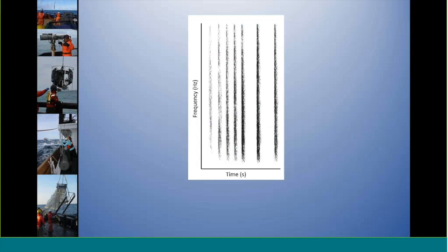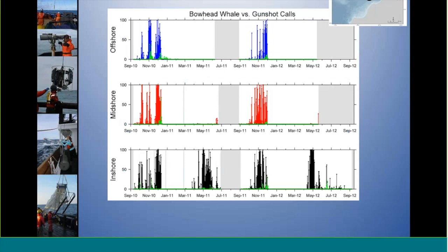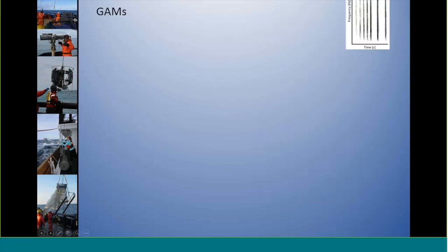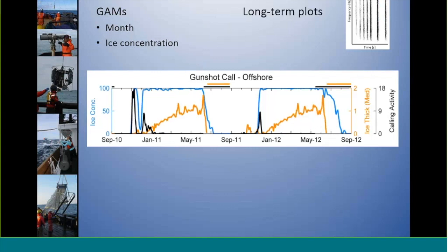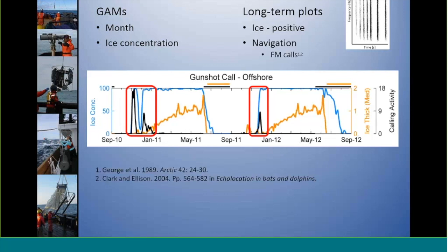In addition to the bowhead frequency-modulated calls or their song, they also produce an impulsive call called the gunshot call, which we analyzed separately. Looking at the gunshot calls, they almost always occurred at the peaks, at the end of peak calling activity in bowhead whales. When compared to oceanographic parameters, the same variables are significant: month and ice concentration. Looking at long-term plots, there's not only a strong positive association with ice, but more specifically with ice formation. These calls always seem to occur when ice is forming, leading us to believe they may be using this call type to navigate, using echoes bouncing off the ice to survey the area or determine ice thickness — which has already been suggested with their frequency-modulated calls.